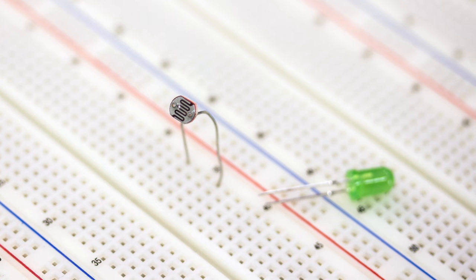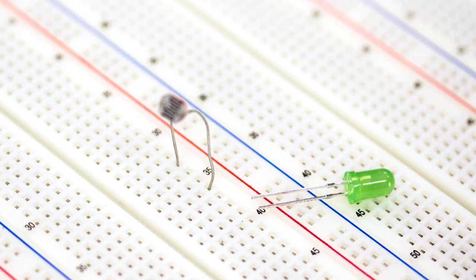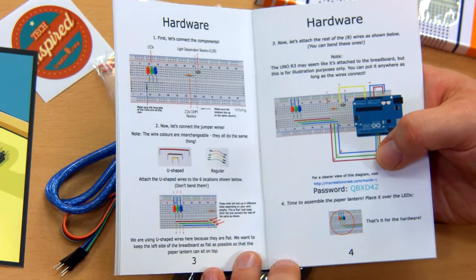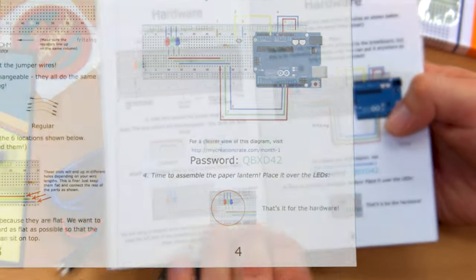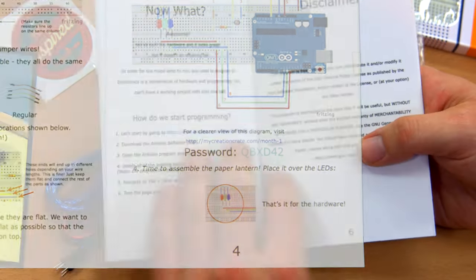Almost everyone knows that LEDs give off light, but perhaps they didn't know that the longer lead is the positive one, and that reversing polarity may kill it. At the bottom of page 4, a URL and password are provided for a clearer view of the diagram. While I didn't have a problem following the images in the booklet, it's nice that they provide it.